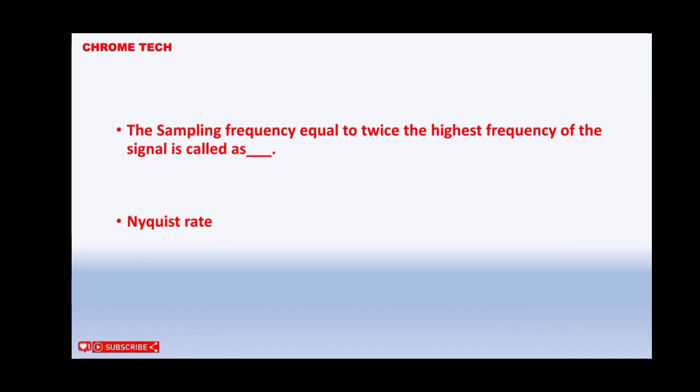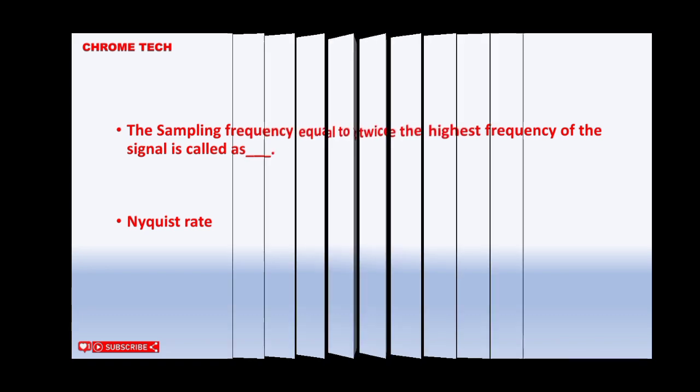The sampling frequency equal to twice the highest frequency of the signal is called. Nyquist rate is the correct answer.